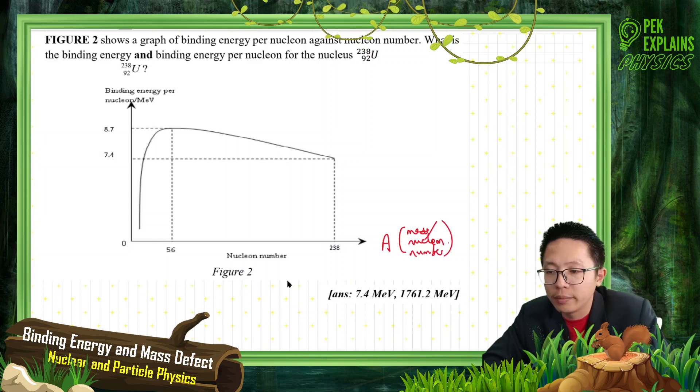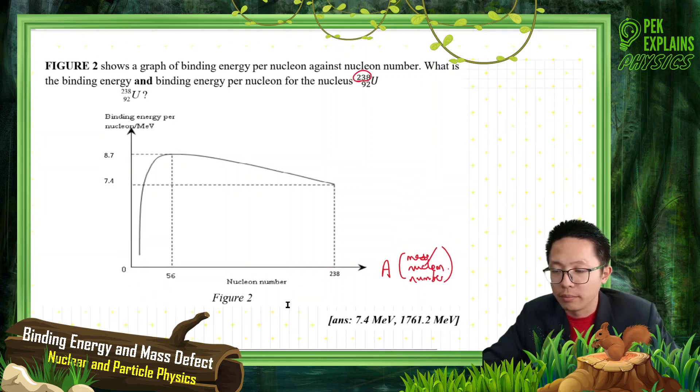Which uranium? We look at the top part, this one, uranium. This is the nucleon number. So for this one, the nucleon number A is 238.